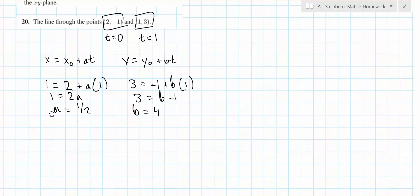So now we can say x equals x₀, 2 plus 1/2 t, and y equals -1 plus 4t. And there we go, that's the line.